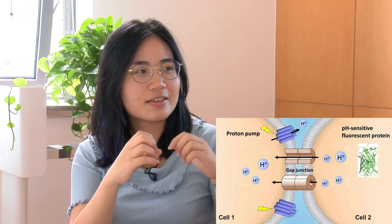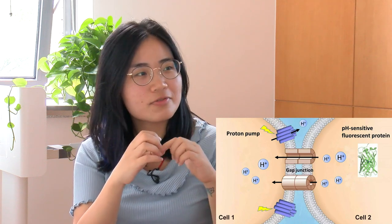And in the other cell, the mediator will go through the gap junction. And in the connected cell, there's a sensor for the small mediator. So once we trigger one cell, there's a response in the other cell. This demonstrates that these two cells are communicated by gap junctions.